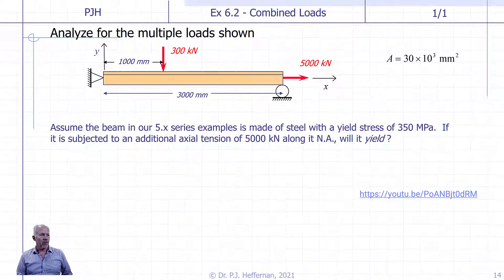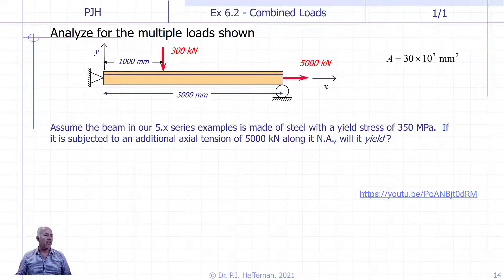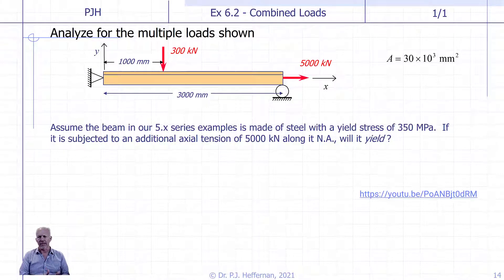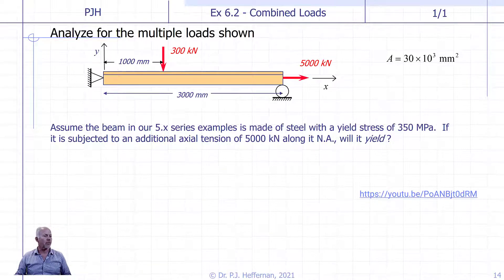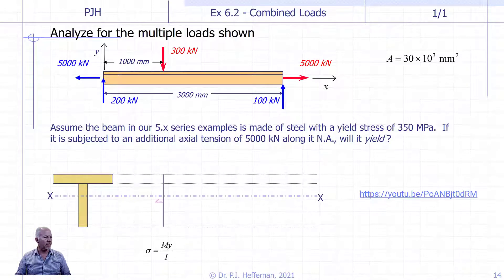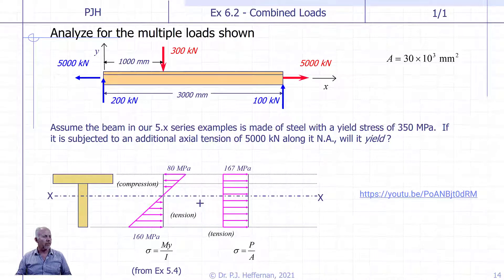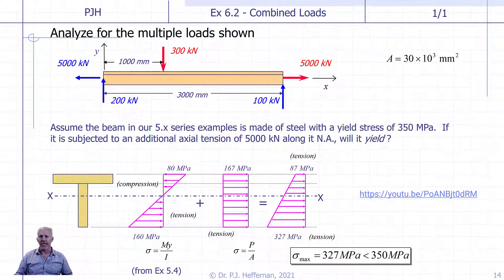Our first example looks at our T-beam, the example we've used previously. We already know its stress distribution resulting from bending, and in this example — with the link to the YouTube provided — we're going to combine the axial stresses and the normal stresses due to bending. I'll quickly show what it ultimately looks like, but I'll leave you to follow that link to go through the example and see the full explanation.